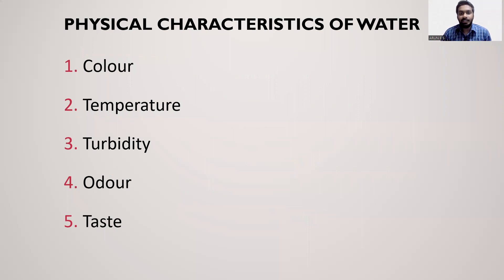The drinking water standards specify the IS code IS 10500, latest revision 2012. The physical properties of drinking water include color, temperature, turbidity, odor, and taste.